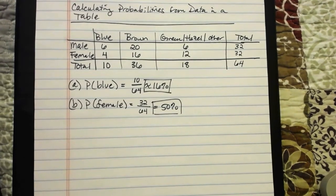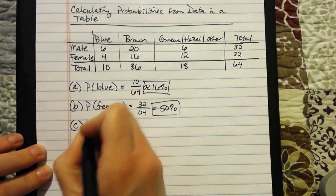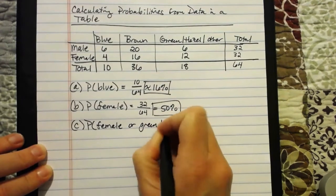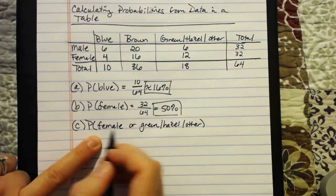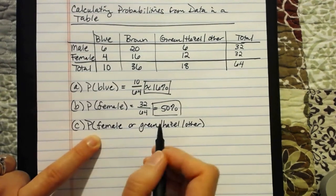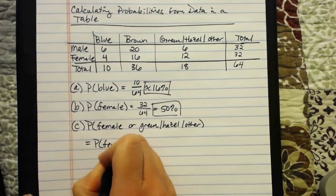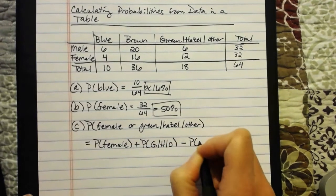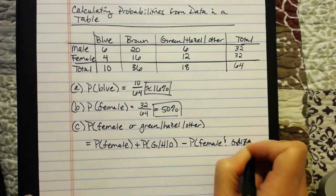Now let's look at an OR rule. Part C: what's the probability of randomly selecting someone who is female or has green, hazel, or other eyes? I need to ask myself, are these two outcomes mutually exclusive? Clearly they're not — it is possible to randomly select someone who is female and simultaneously has green, hazel, or other eyes. There is an overlap. So I need to use the general rule: probability of female plus probability of green/hazel/other, minus the probability of the overlap — female and green/hazel/other.